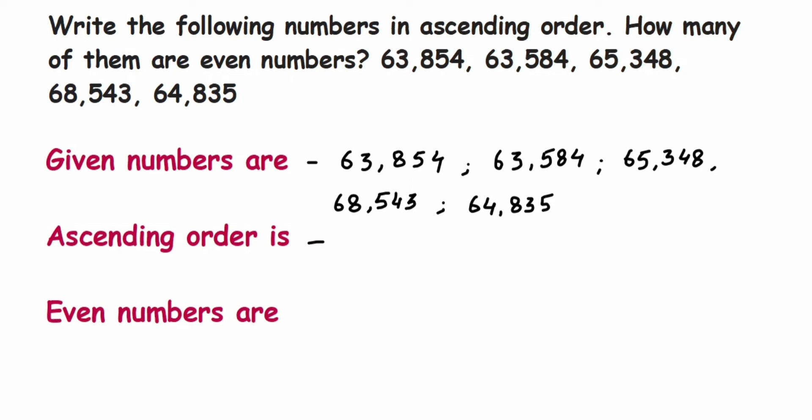So the smallest number here—we have 68,000, 65,000, 64,000—so smallest is 63,000. But there are two 63,000 numbers: one is 63,854 and the other is 63,584.